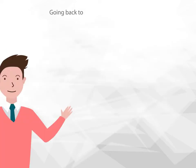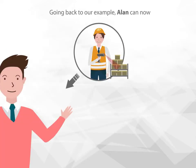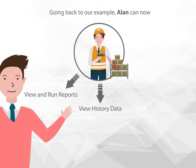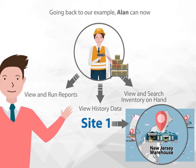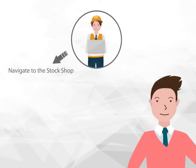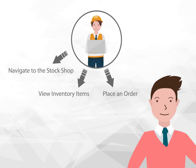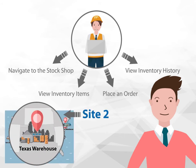Going back to our example, Alan can now view and run reports, view history data, and view and search inventory on hand in site one where he's a system user. He can navigate to the stock shop, view inventory items, place an order, and view inventory history in site two where he's a shopper.